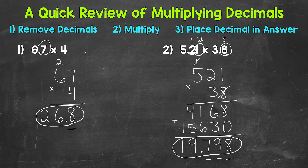So there you have it — a quick review of multiplying decimals. Remove the decimals. Multiply as you normally would with whole numbers. And then place your decimal in the answer: look at the original problem, see how many digits are to the right of a decimal, and your answer is going to match that.